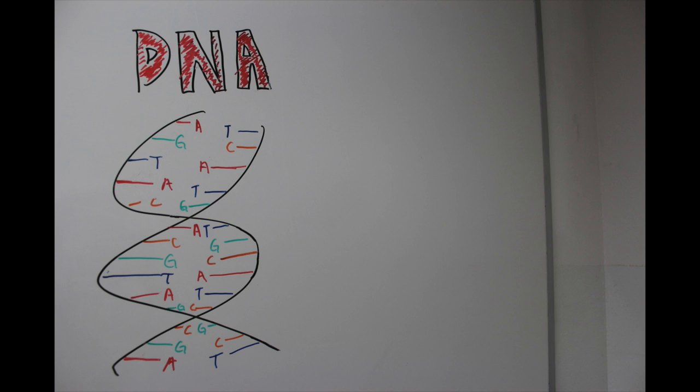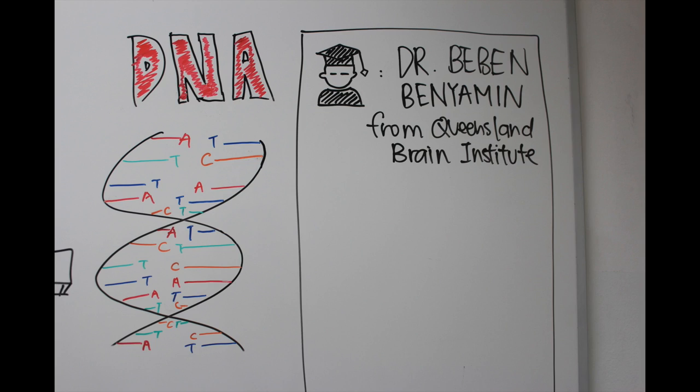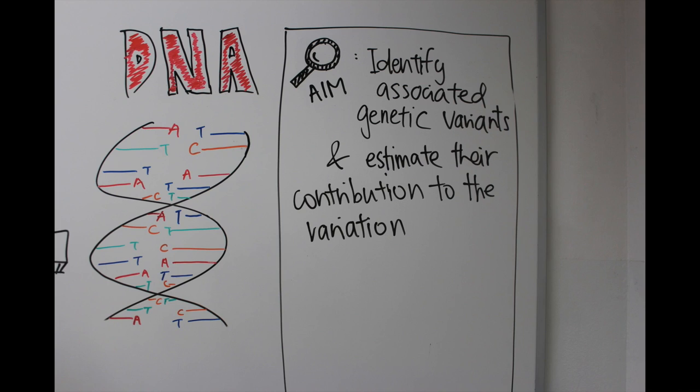Our study is called, Chowu Intelligence is heritable, highly polygenic, and associated with FMBK1L, which is the gene primarily associated with intelligence. This study was conducted by Bevan Benyame from the University of Queensland. The aim of this study is to identify associated genetic variants and estimate their contribution to the variation in Chowu Intelligence.